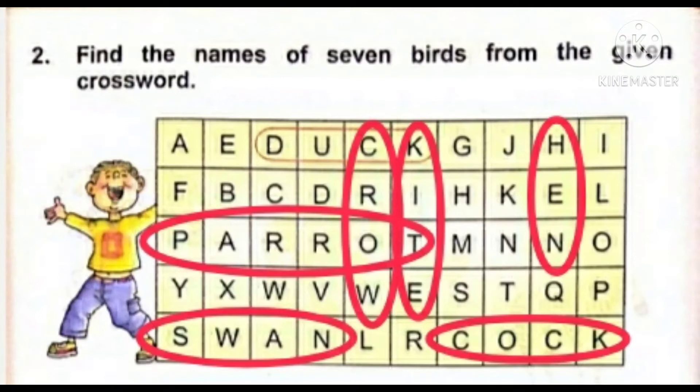Let us read the names of birds one by one: parrot, swan, cock, crow, kite and hen. So you all will see the picture and encircle the same in your book. Aap aise hi dekhenge aur apne book mein encircle kar lenge. Aur phir in saare birds ke naam yaad kar lenge.